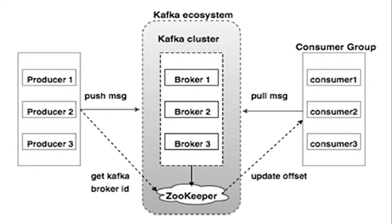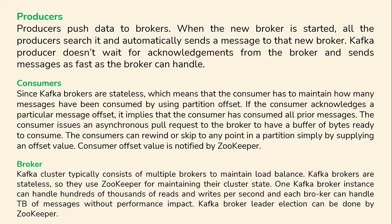A typical Kafka ecosystem looks like this: we have a producer on one side and the consumer on the other side. The producer produces the message, which does not go directly to the consumer — it goes to the broker. In this diagram we are using ZooKeeper as the broker, which manages all the Kafka clusters. A producer pushes the data to the broker. When a new broker is started, the producer searches it and automatically sends a message to that new broker. Kafka producer does not wait for acknowledgement from the broker and sends messages as fast as the broker can handle.